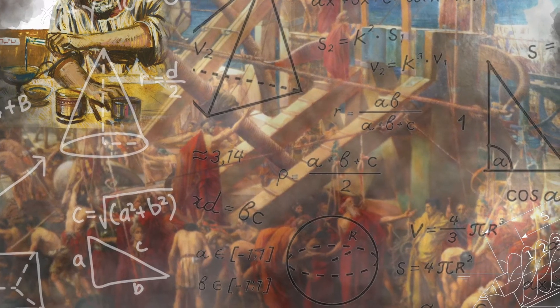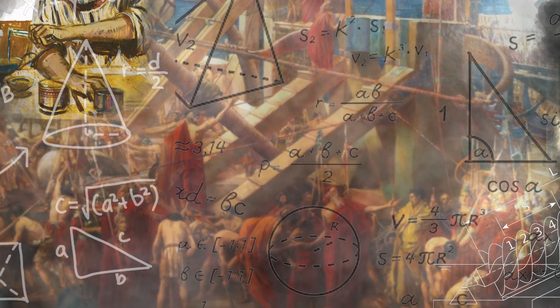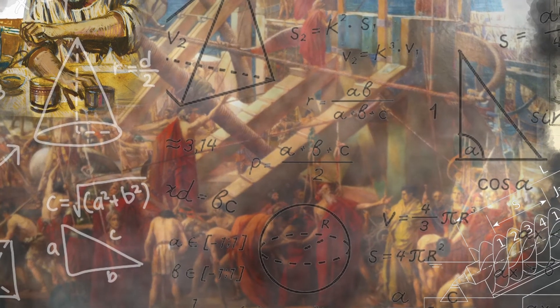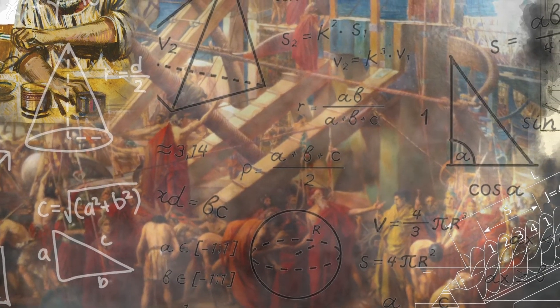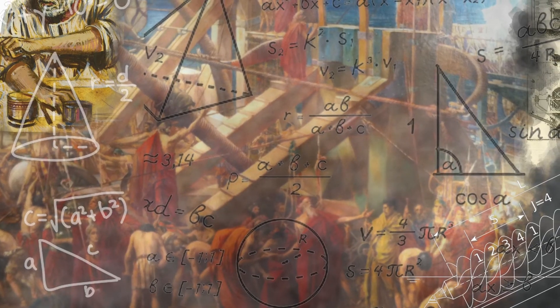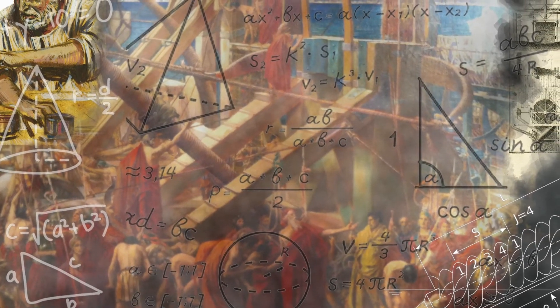Yet some of Archimedes' discoveries, including the one he was most proud of, were purely theoretical. He proved that the volume of a sphere is two-thirds of the cylinder into which it fits perfectly. The discovery was so profound for him that he asked for a diagram of a sphere inside the cylinder to be inscribed on his tomb, a request that was duly complied with.